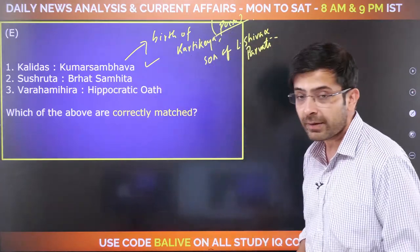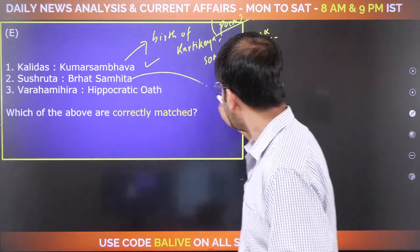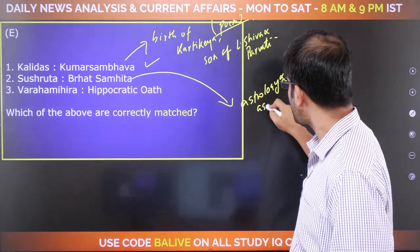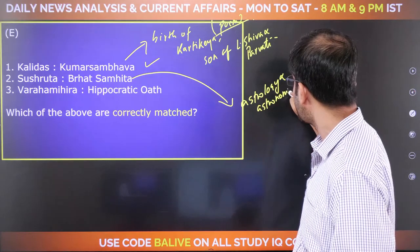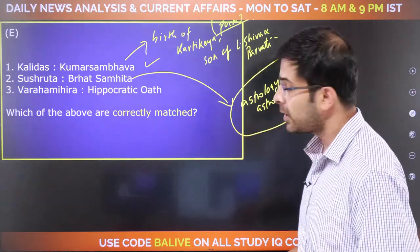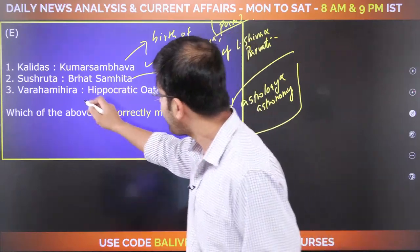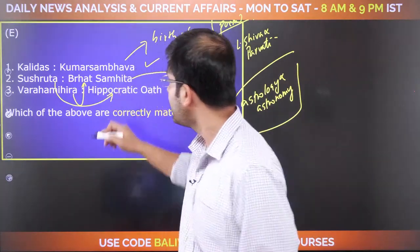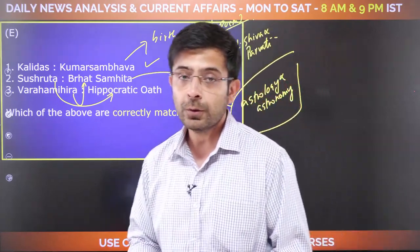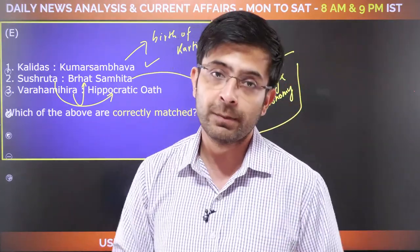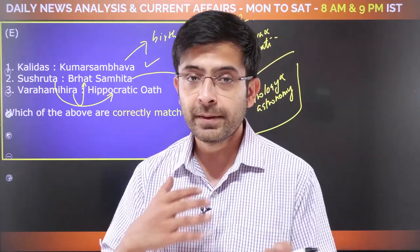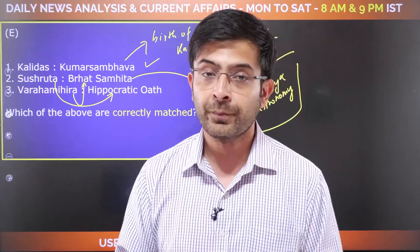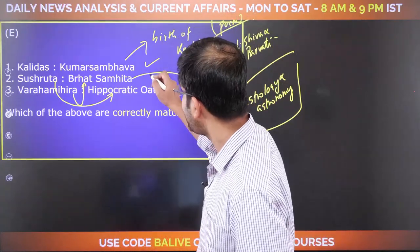Did Sushrut write Bharat Samhita? No. Bharat Samhita is a book on astrology and astronomy, and Sushrut was associated with medicine and surgery. It was Varahamihira who wrote Bharat Samhita. Sushrut is the one credited with the Hippocratic oath — the oath that doctors take before they operate on a patient, an oath of good faith and commitment for the well-being of the person. These two are incorrectly matched.